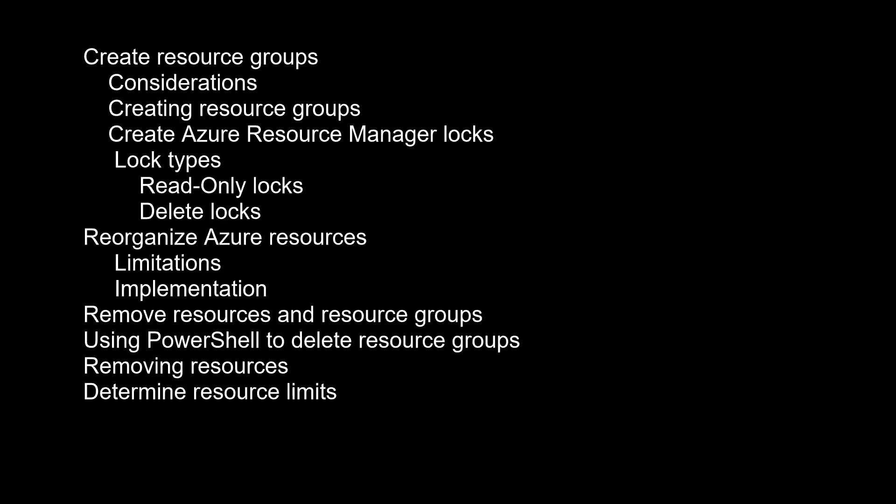When creating a resource group, you need to provide a location for that resource group. You may be wondering: why does a resource group need a location, and if the resources can have different locations than the resource group, why does the resource group location matter at all? The resource group stores metadata about the resources. Therefore, when you specify a location for the resource group, you are specifying where that metadata is stored. For compliance reasons, you may need to ensure that your data is stored in a particular region. Note: by scoping permissions to a resource group, you can add, remove, and modify resources easily without having to recreate assignments and scopes.